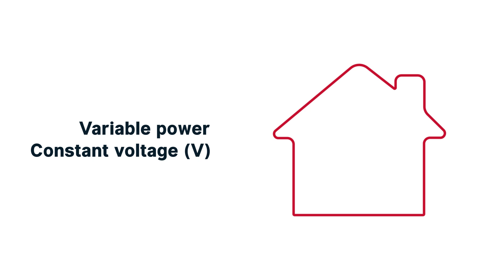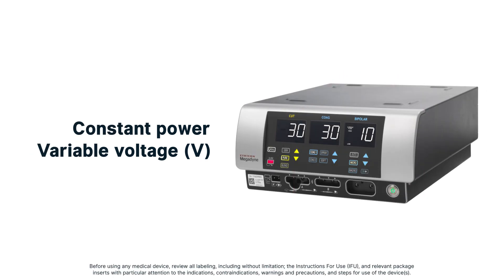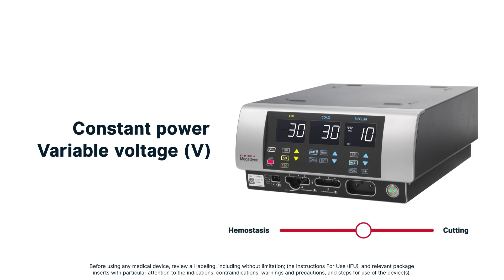At home, common electric appliances run on variable power and constant voltage. However, standard electrosurgical generators generally deliver constant power and variable voltage to provide controlled tissue effects.